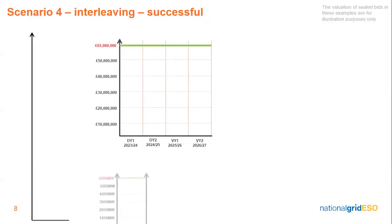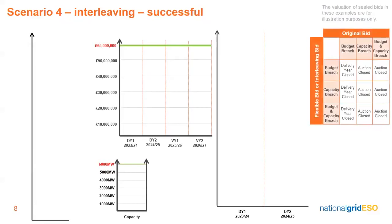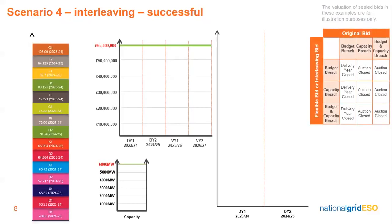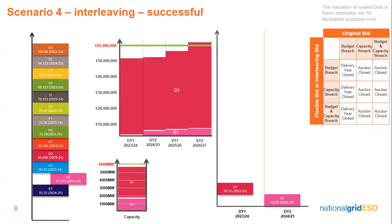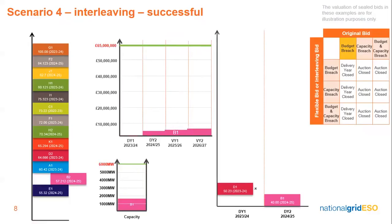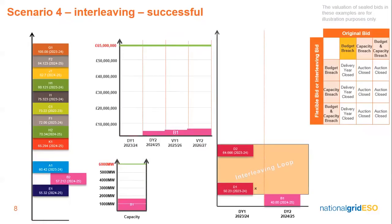Let's take a look at interleaving. Scenario 4: Interleaving Successful. Interleaving occurs when any bid breaches the budget and/or capacity cap, and there are still bids from the same application present in the bid stack. Here again we can see that bids are both allocated within the budget and capacity. Bid D1 has breached the budget. A flexible bid, D2, is present in the bid stack and can be considered for interleaving. An interleaving loop forms between D1 and D2, and all incoming bids are provisionally assessed to see whether they can fit into the budget and capacity, including bid D2.